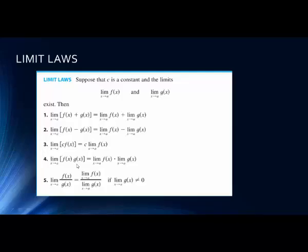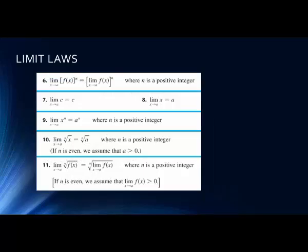If we're taking the limit of a product, we can take the product of the limits. We also saw that if we have a quotient — the limit of a quotient — rule five says this is equivalent to the quotient of the limits. So we can apply the limit to each piece. These are pretty intuitive. The only caveat is that the denominator cannot equal zero. We're going to look at what happens in cases where we can't do this, mainly because we'll have a zero denominator, which means the value doesn't exist.